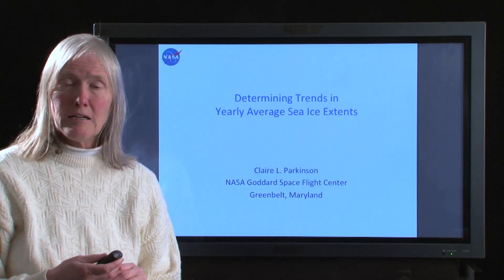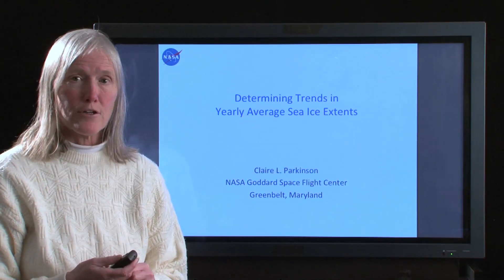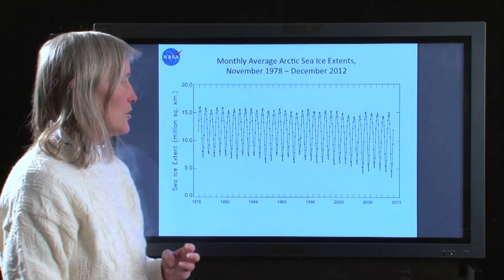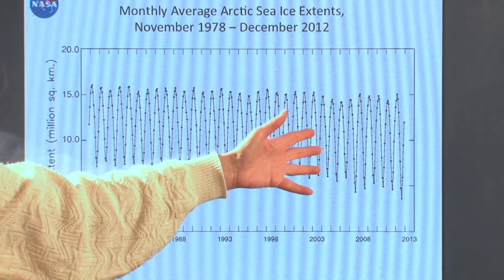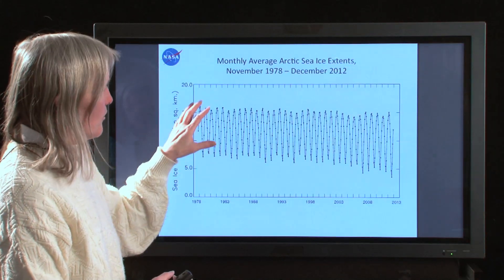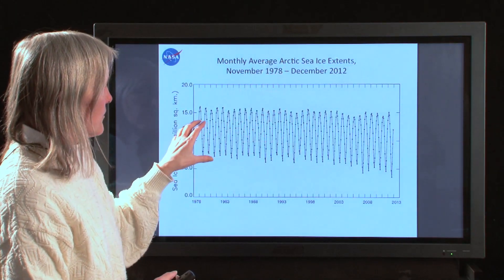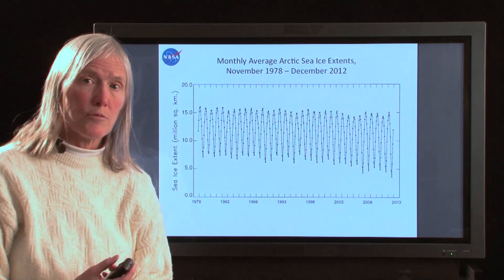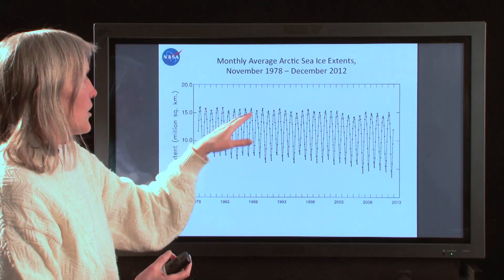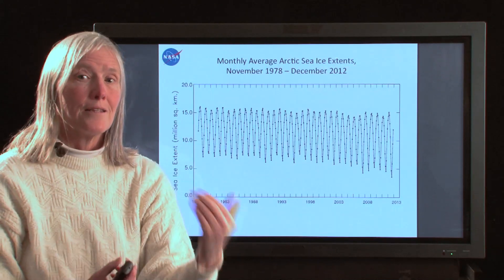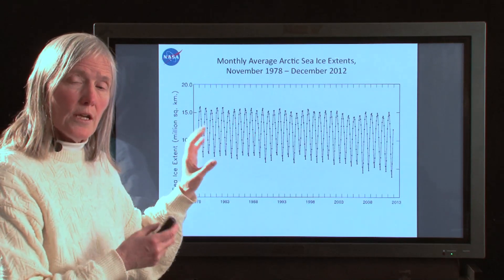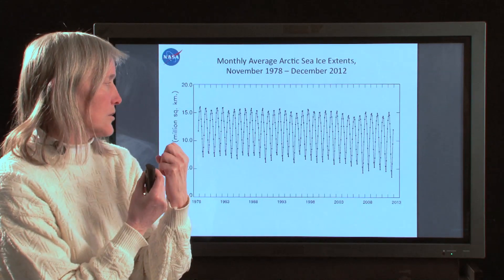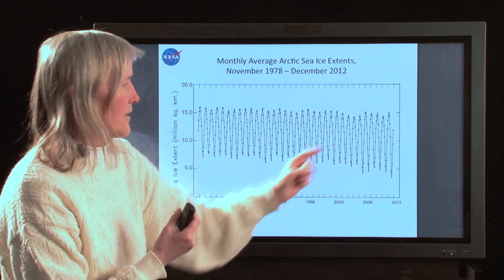Hi, I'm Claire Parkinson, a scientist at NASA's Goddard Space Flight Center, and this is the second of three videos. I'm going to be showing you from where we ended with the first video, which was a set of plots of the Arctic sea ice monthly averages through this long-term record from November of 1978 to December of 2012, and a similar plot for the Antarctic. In this video, I'm going to show you how we as scientists take these results and come up with something more single-mindedly looking at the trend in the data.